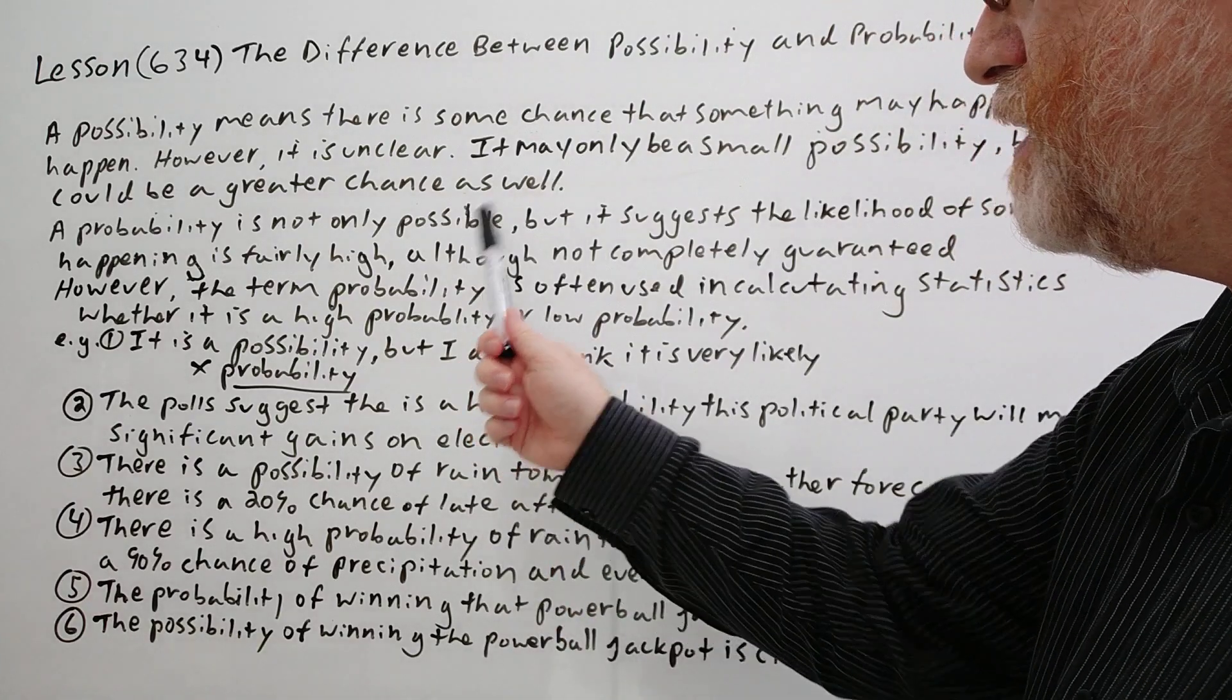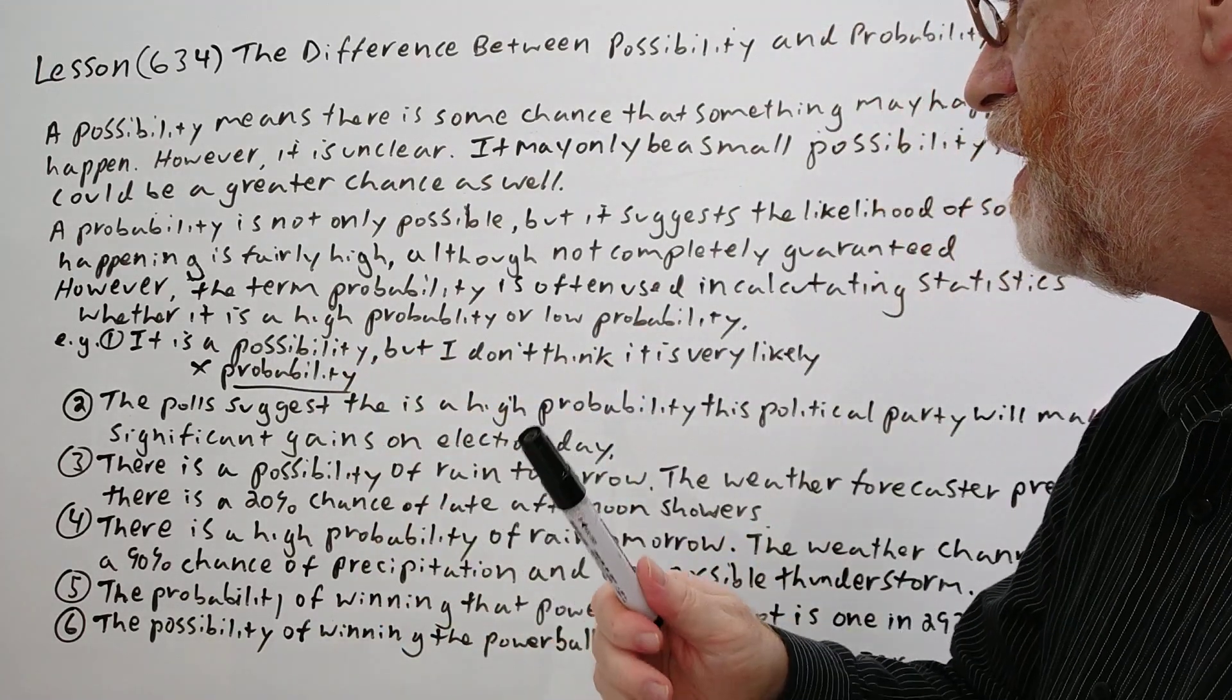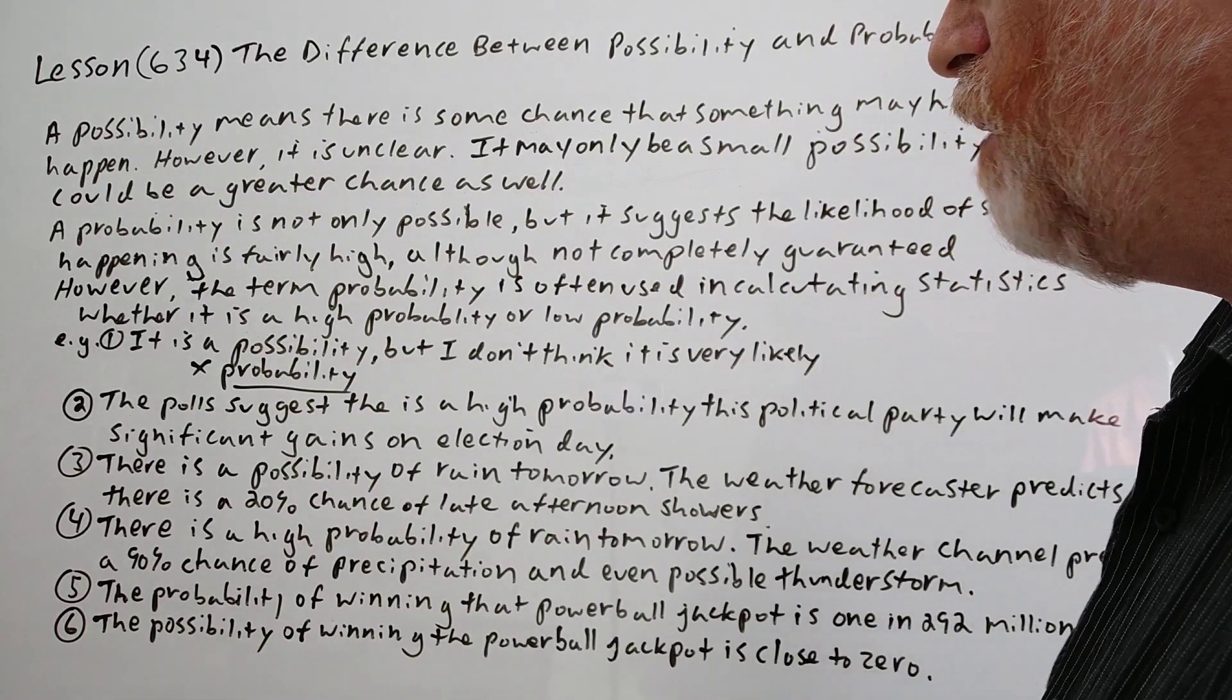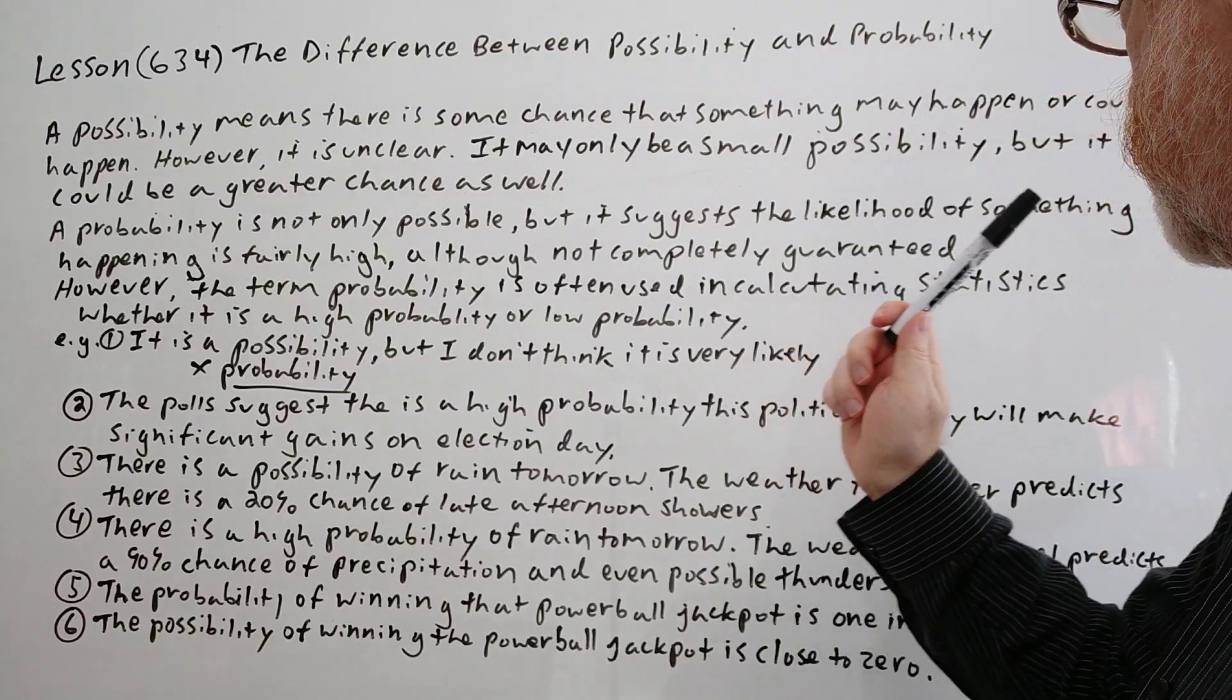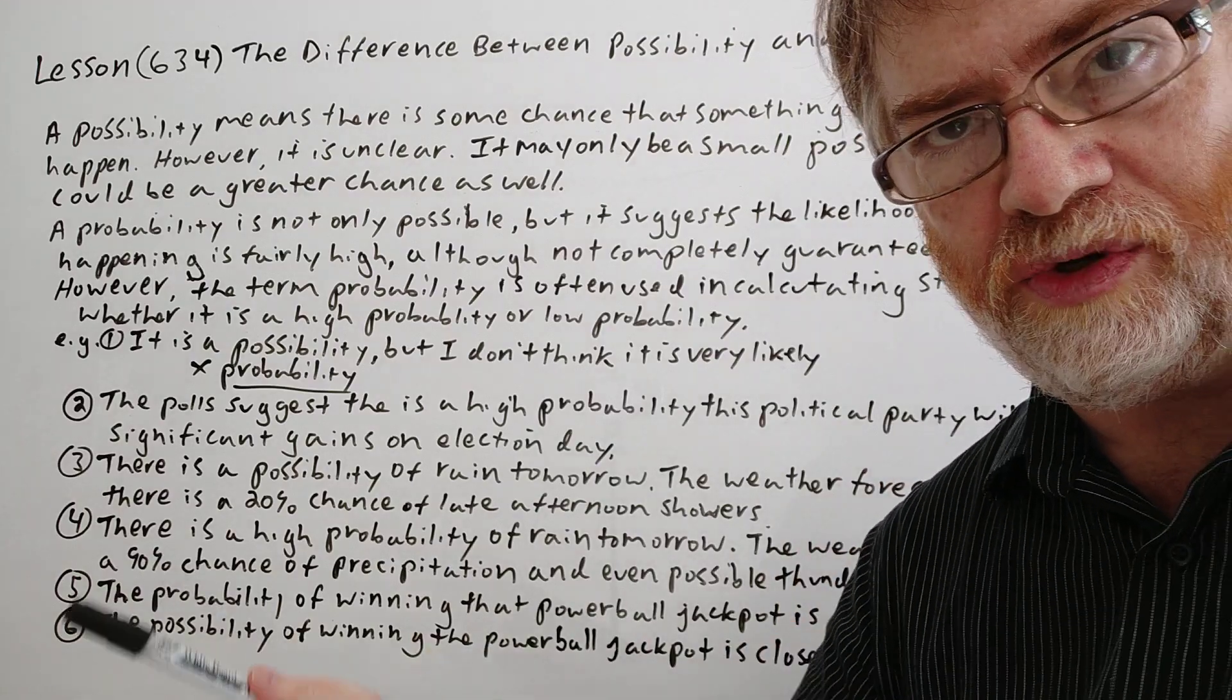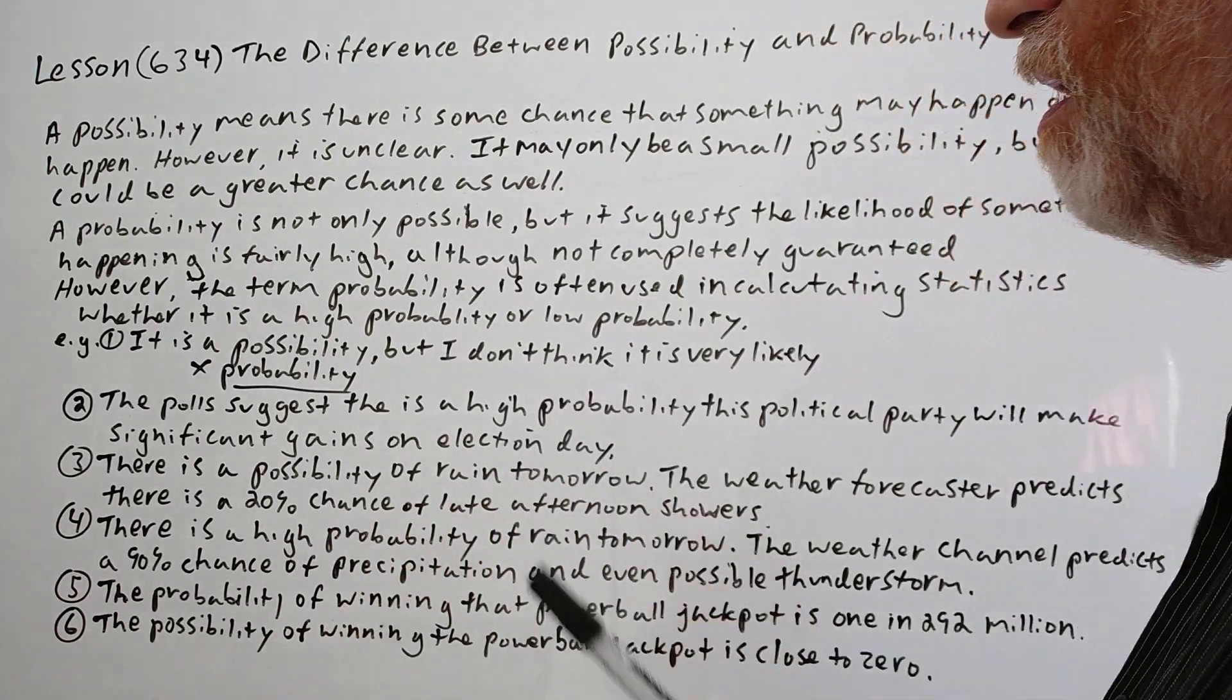A probability is not only possible, but it suggests the likelihood of something happening is fairly high. So basically it's kind of saying that it's more likely, although not completely guaranteed. However, the term probability is often used in calculating statistics, whether it is a high probability or low probability. So people in statistics like to use the word probability when they're figuring out calculations. They will use probability and not really use possibility so much.